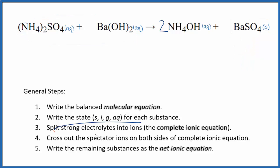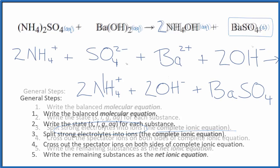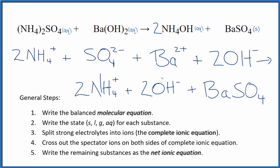Next we can split the strong electrolytes into their ions for the complete ionic equation. In ionic equations, we don't split apart solids, so we're going to leave the barium sulfate together. This is the complete ionic equation.